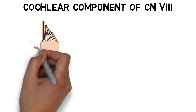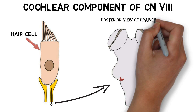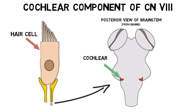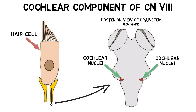The cochlear component of cranial nerve 8 begins with neurons that make connections with hair cells, the sensory receptor cells of the auditory system. When hair cells are activated, they relay auditory signals to the cochlear portion of the nerve through changes in levels of neurotransmitter release. The cochlear nerve travels from the cochlea to the dorsal and ventral cochlear nuclei, found at the junction between the pons and medulla. From there, the auditory information is sent to areas in the brainstem and cortex involved with auditory processing.